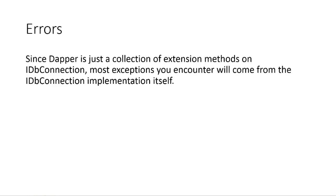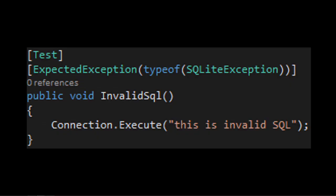Last thing: errors. Dapper is just a set of extension methods that extend an existing ADO.NET implementation. When you write an incorrect SQL query, the error you get comes from that provider, not from Dapper itself. So if you're using SQLite you'll get an SQLiteException. If you're using SQL Server you'll get a SQL exception. Dapper throws whatever you give it to the engine, and the engine gives you the error — driving home the point that Dapper is essentially a very efficient wrapper around existing ADO.NET implementations.